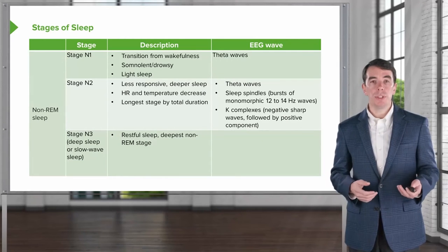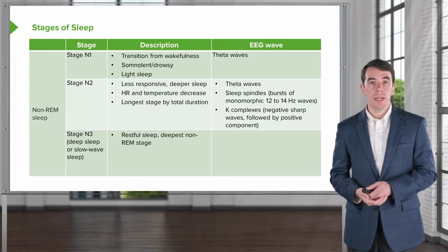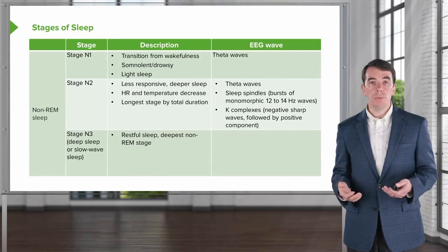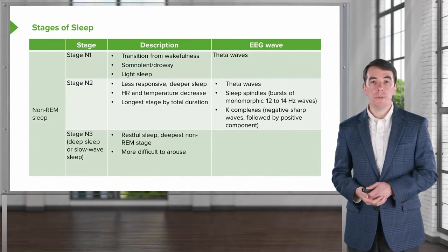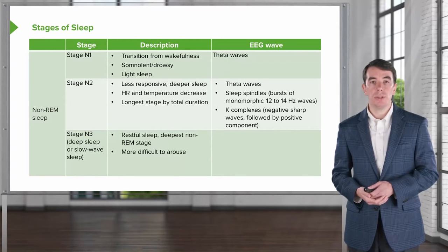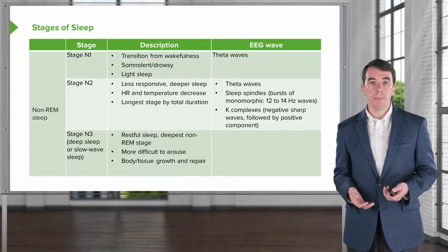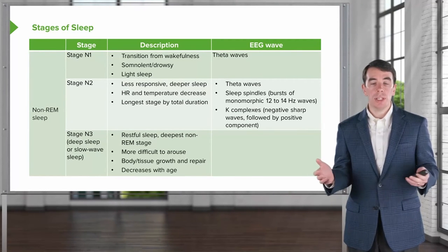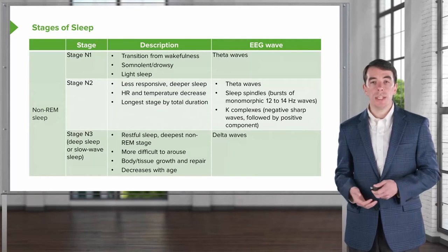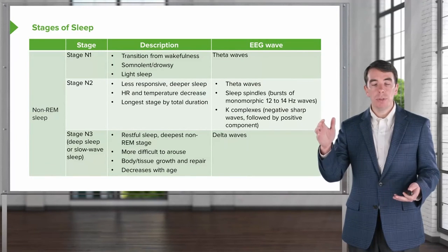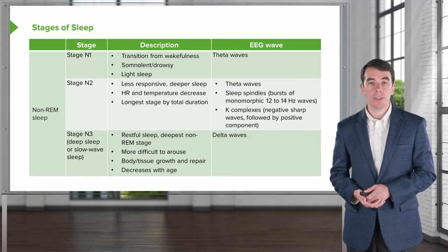And then the brain moves into slow wave or deep sleep. And this is characterized by stage three sleep. In this stage, restfulness occurs. This is the deepest part of sleep. It is much more difficult to arouse individuals from this deep stage three sleep. Body tissue growth occurs. This is where the brain and body will repair. And this decreases in duration over the course of life with age. Here we see on the EEG delta waves. These are the highest amplitude, lowest frequency waves as the brain is very calm and relaxed and in deep sleep.